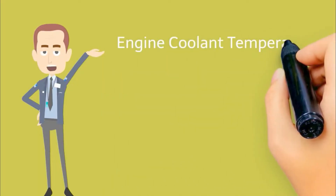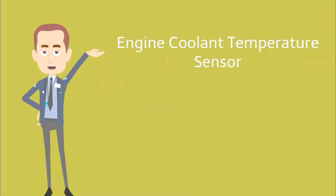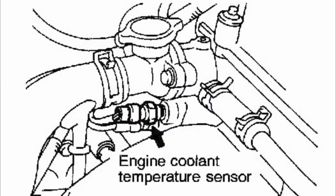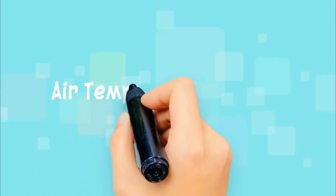Engine coolant temperature sensor: its function is to instruct the radiator fan to turn on and cool down the liquid after the temperature goes above 75 degrees. It is usually located at the bottom of the radiator or at the top radiator hose towards the engine block.